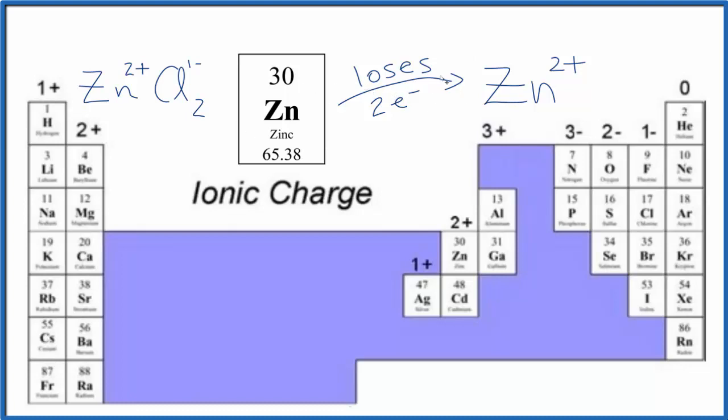Zinc will lose electrons. It's a metal. It'll lose electrons to form the zinc ion, Zn²⁺. Do note we're talking about ionic charge here, that's the charge when elements form ions, which is different than oxidation number, although they really do overlap quite a lot.